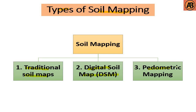Number three is pedometric mapping, also known as statistical soil mapping. This is a data-driven generation of soil property and class maps based on the use of statistical methods. Pedometric mapping is largely based on applying geostatistics in soil science. That covers all the types of soil mapping. Thanks for watching, see you in the next video.